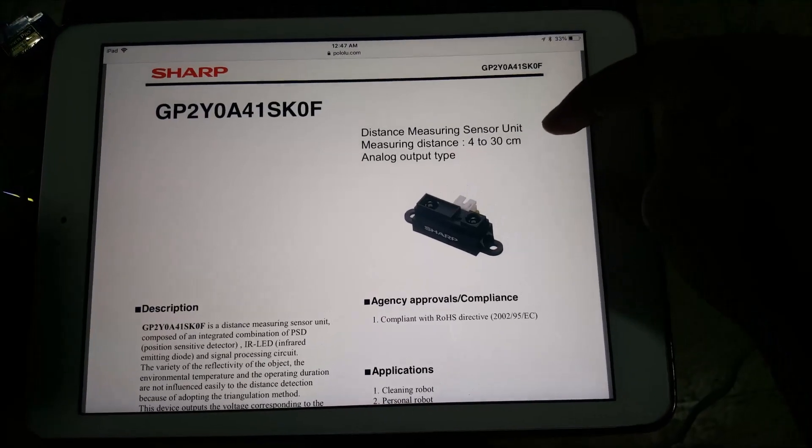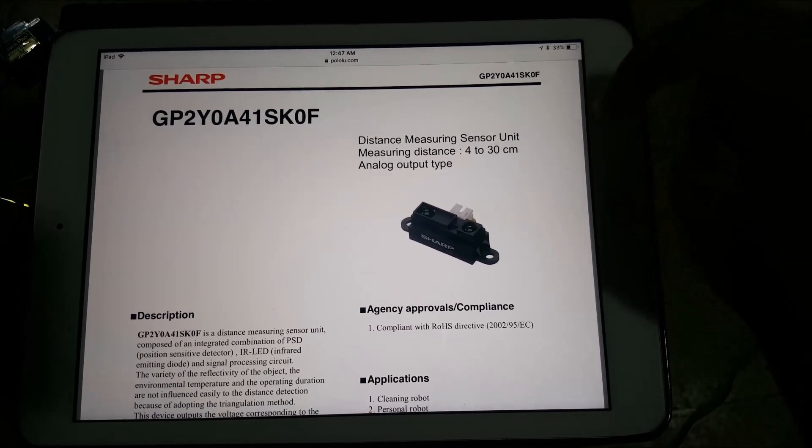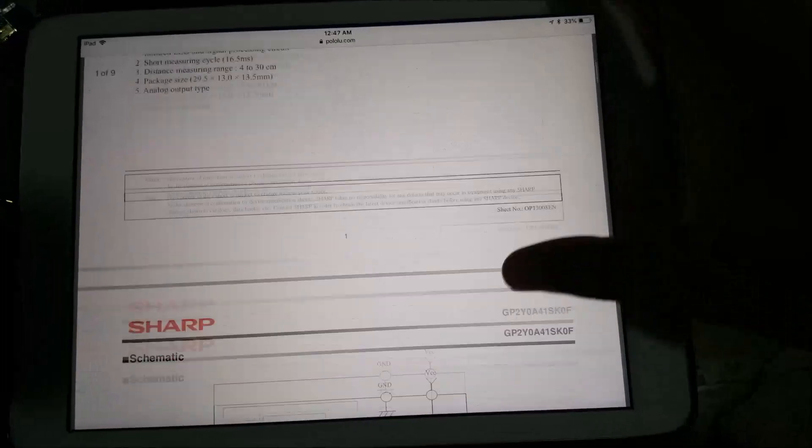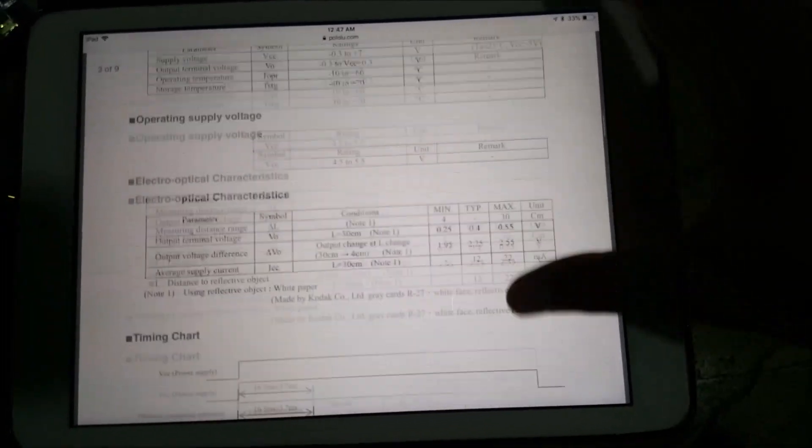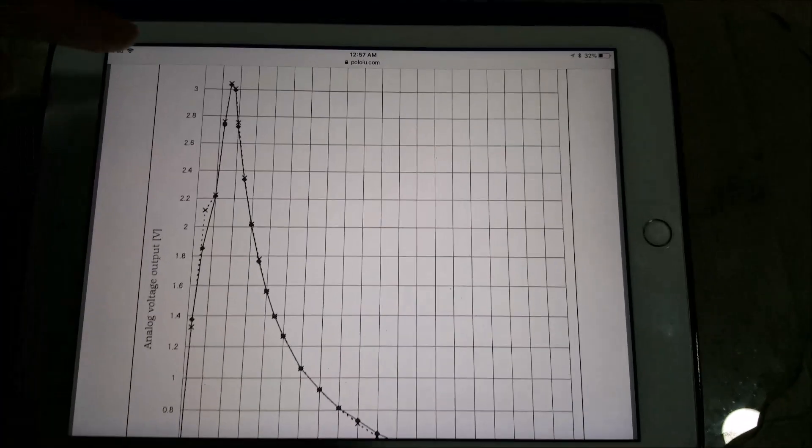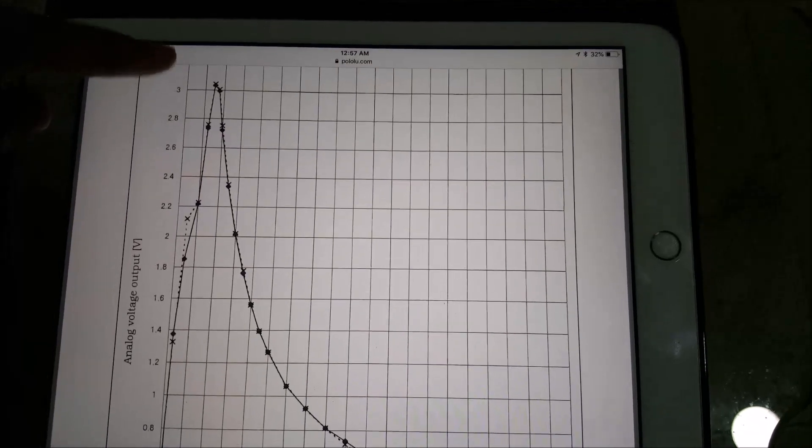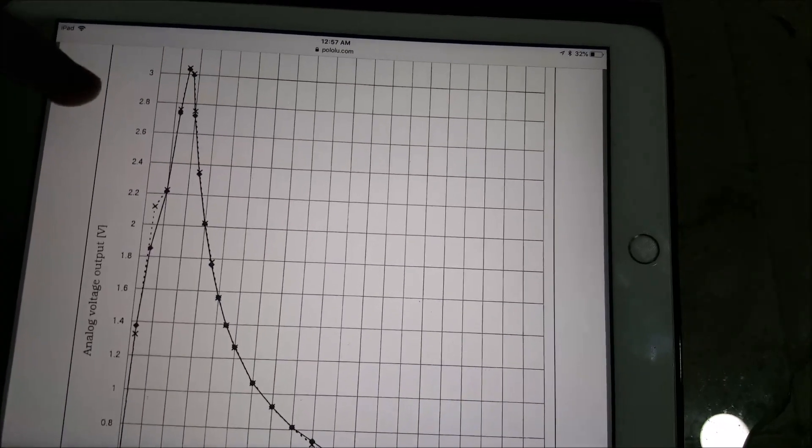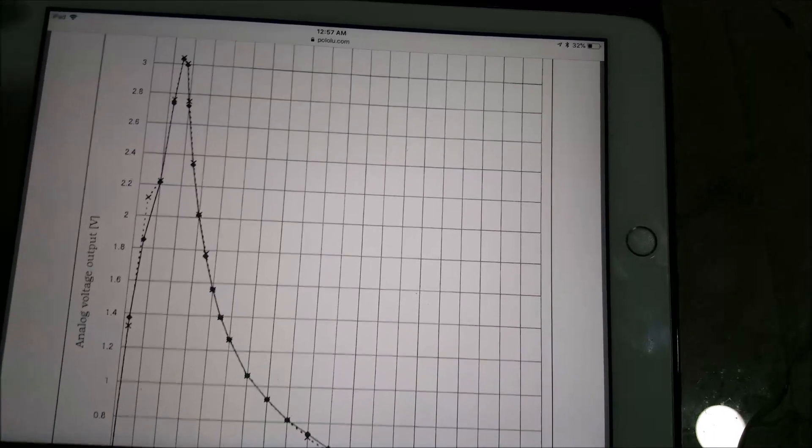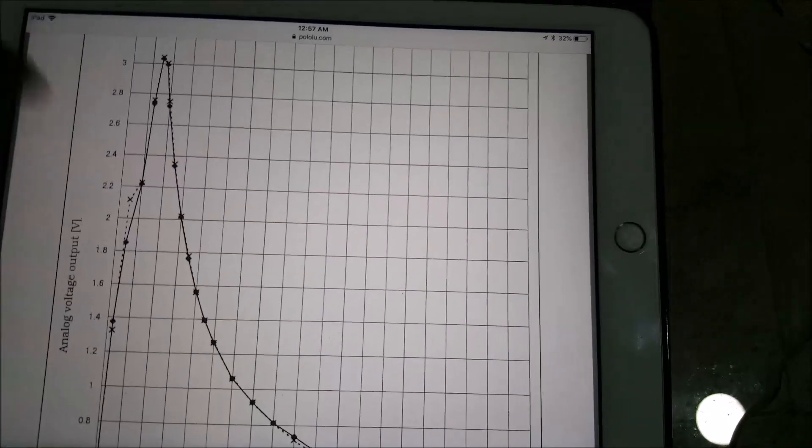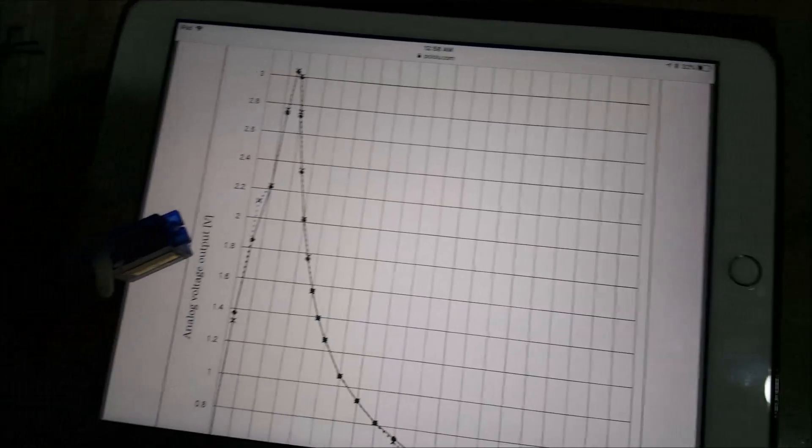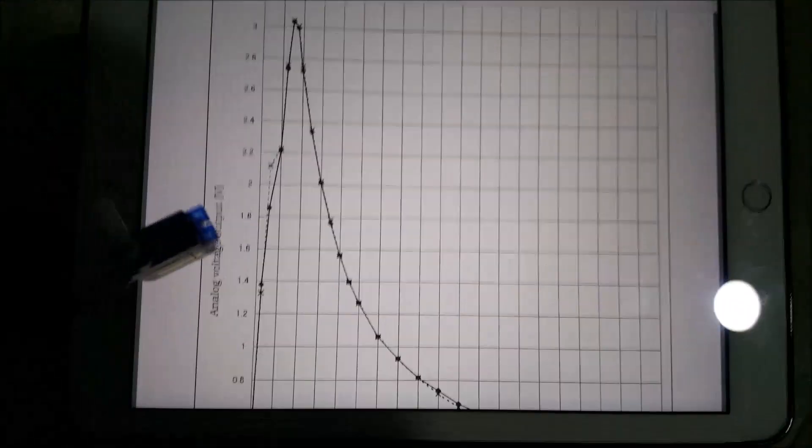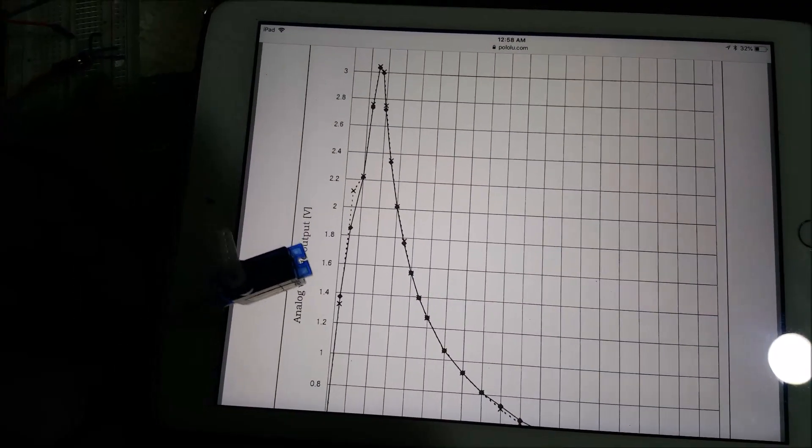If we scroll down here, as the object gets close to the IR sensor, basically less than 4 centimeters, the voltage will start to drop as shown here. That's why the servo motor initially is at 180 and as I get closer it goes back, because the voltage that gets converted by the sensor decreases.